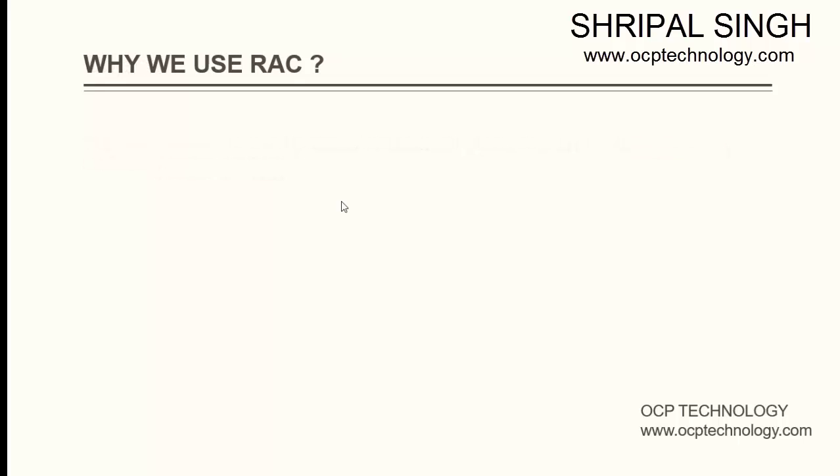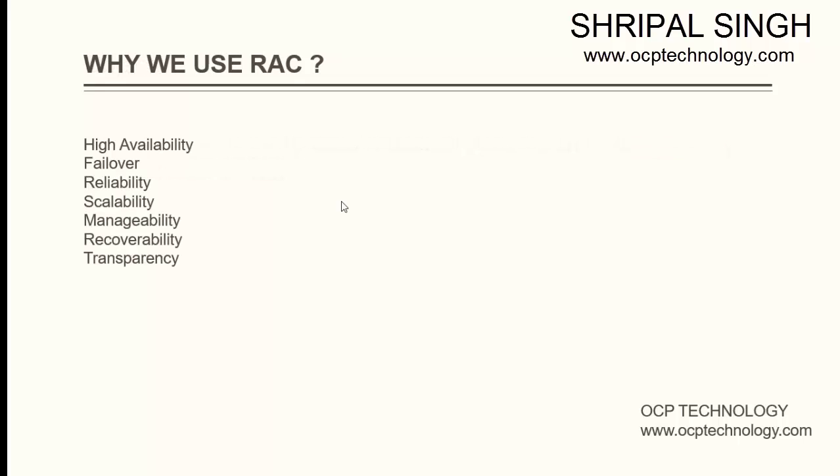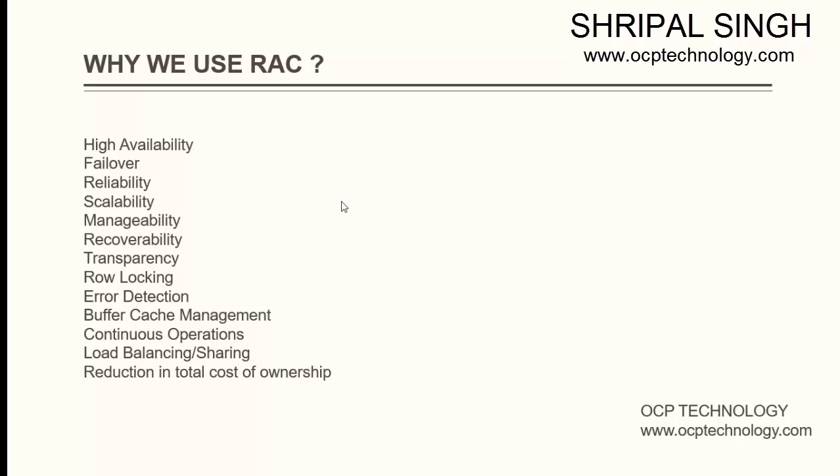Why do we use RAC? Because of high availability, failover, reliability, scalability, manageability, recoverability, transparency, row locking, error detection, buffer cache management, continuous operations, load balancing, sharing, and reductions in total cost of ownership. These are all the basic uses and main purposes of using Oracle RAC.